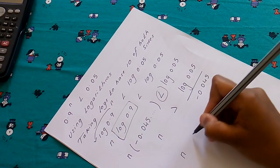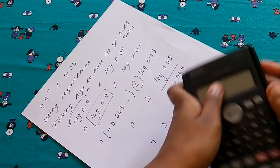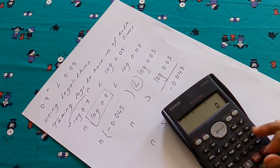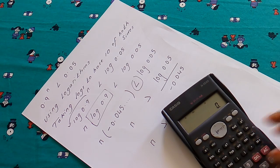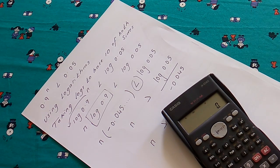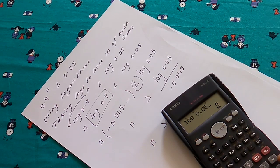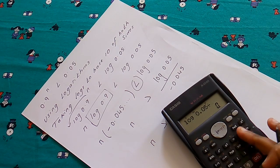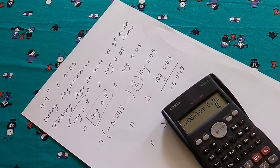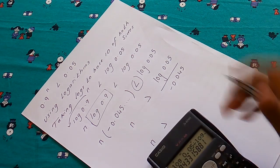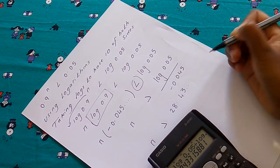So n is greater than, using the calculator, log(0.05) divided by log(0.9). We have n is greater than 28.43 dot dot dot.